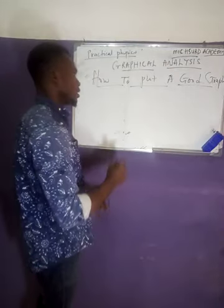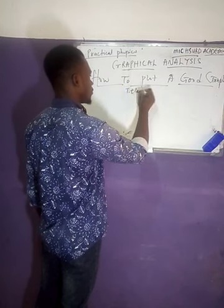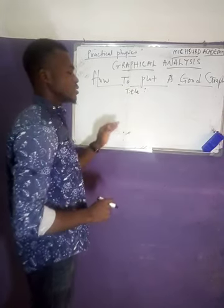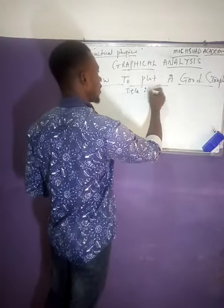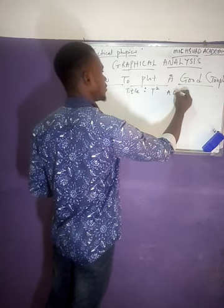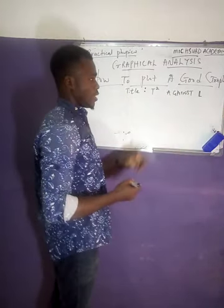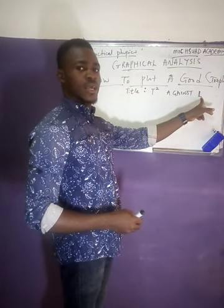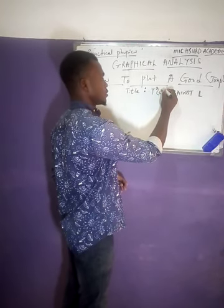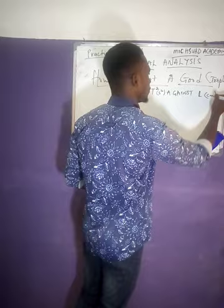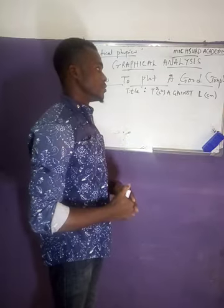The first thing you consider before plotting the graph is to give a title to the graph. For example, if you are plotting a graph of T-squared against L, where T is the period and L is the length, you will also want to put the units for these variables, because T can mean anything and L can mean any quantity.